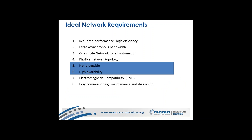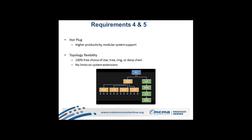Looking at hot pluggability and high availability: every component in Powerlink is required to have two Ethernet ports, connected internally by an internal hub or repeater. This allows flexible structures — you might have a PLC with IO and drives on one side and a hub fanning out to more components on the other. This allows any kind of structure without being limited to a ring or daisy chain.